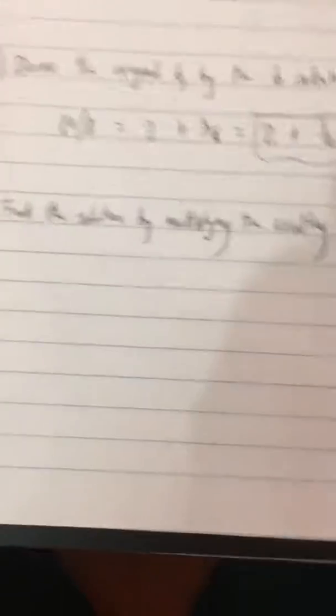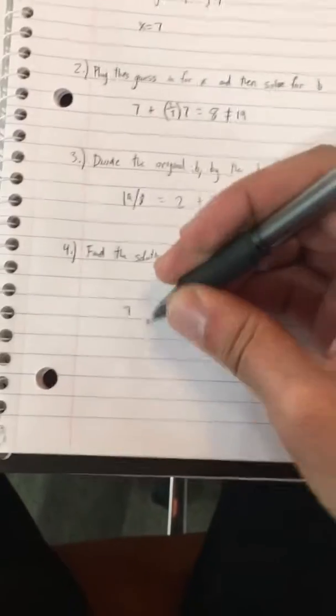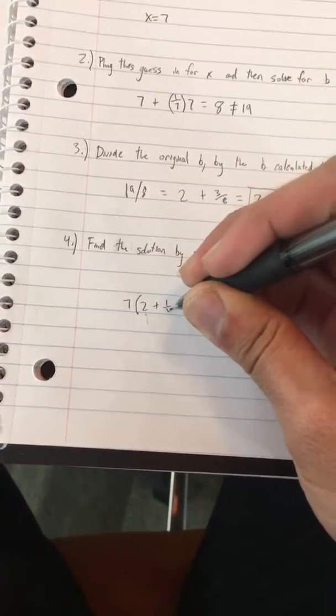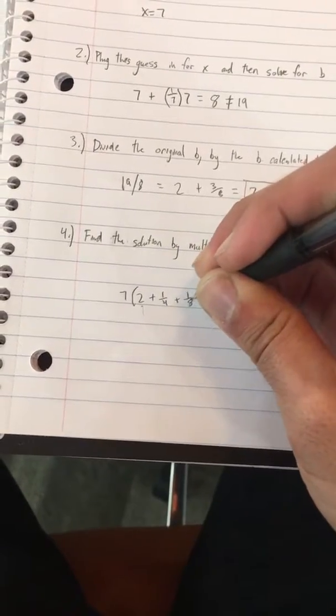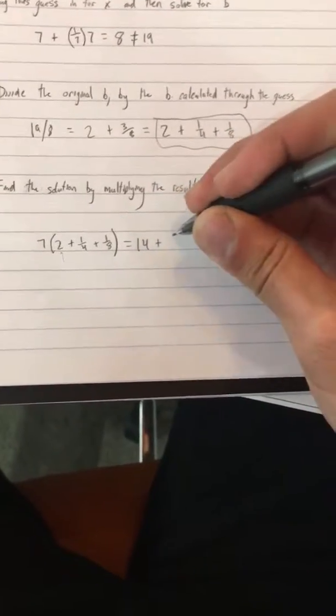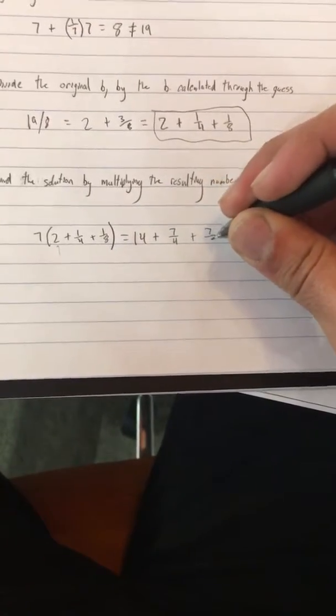And now, we want to take this quantity here, we want to multiply it by our original guess of 7. And when we do that, we're going to get 7 times, so 2 plus 1/4 plus 1/8, coming from the previous step. And that is going to give us 14 plus 7/4 plus 7/8.